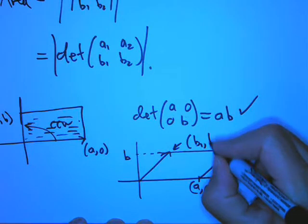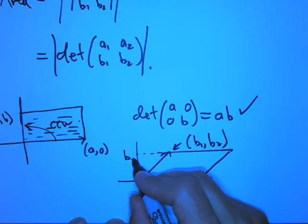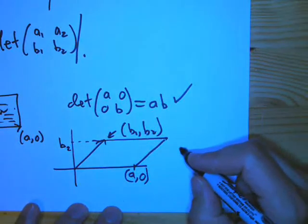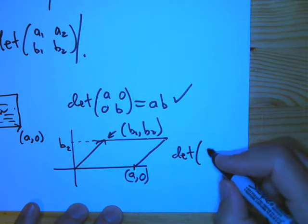And now what's the determinant going to be? It's still going to be A0 and then B1, B2.